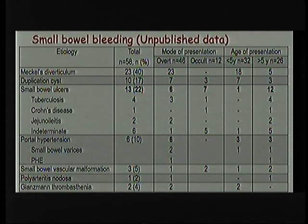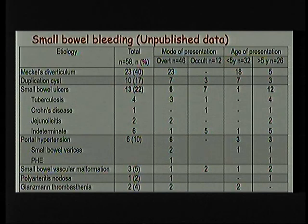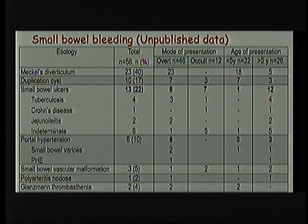For small bowel bleeding there is no comprehensive study in children. This is unpublished data from SGPGI still under publication. Among our children, Meckel's diverticulum and duplication cyst is still the most common cause, so we should look for these first. In children less than 5 years presenting with frank blood or maroon-colored altered blood, Meckel's and duplication will be the most common cause. Other causes include small bowel ulcers, small bowel vascular malformations, polyarteritis nodosa, and Glanzmann thrombasthenia.